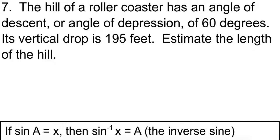Okay, so we're at the top of this roller coaster, right here, and we're going to assume that it kind of goes down like this. Obviously roller coasters curve a little bit, but we need to be able to make a triangle out of it. It has a vertical drop, so from the vertical it's going down 195 feet, and we want to know the length of the hill. We're going to call that X, and we have an angle of depression of 60 degrees.